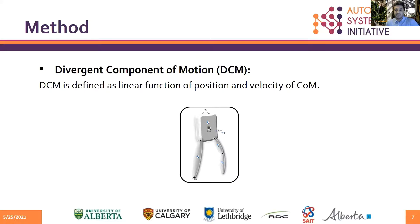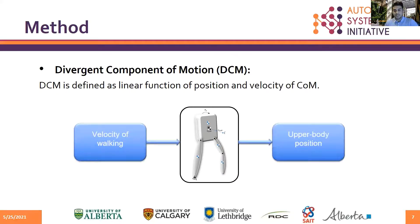The DCM (Divergent Component of Motion) is defined as a linear function of the position and velocity of the center of mass of the human-exoskeleton system. Controlling the DCM at the end of each step can provide posture stability. For a human-exoskeleton system, the DCM at the end of the step is a function of the velocity of walking. Therefore, the DCM controller is designed to receive walking velocity as input, calculate the desired end-of-step DCM value, and adjust the upper body position to reach the calculated desired value.